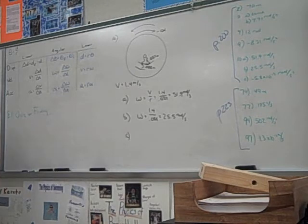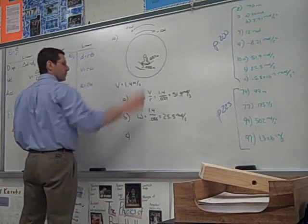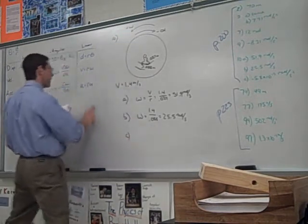So, if something's slowing down, remember the sign of the acceleration is opposite of that of the velocity. Positive omega here. Okay. So, now we want to find alpha.